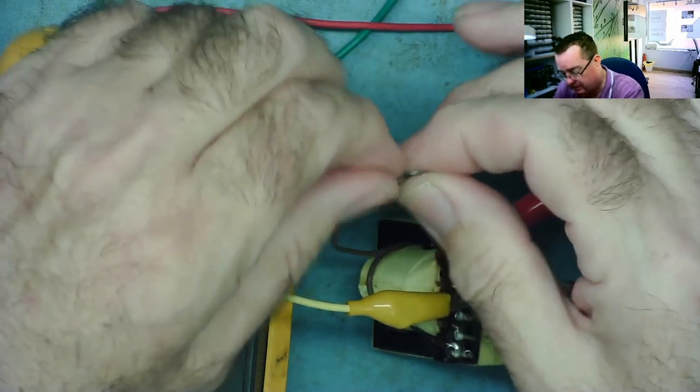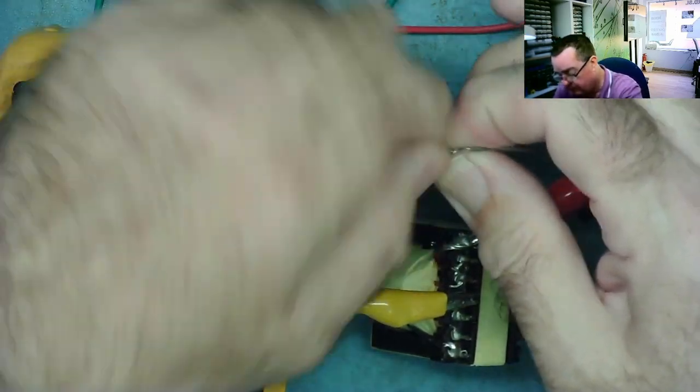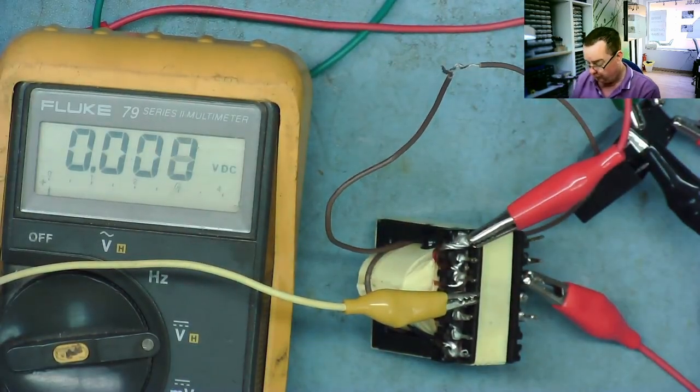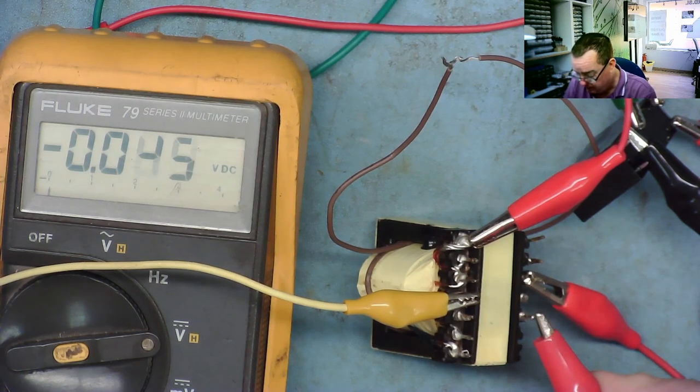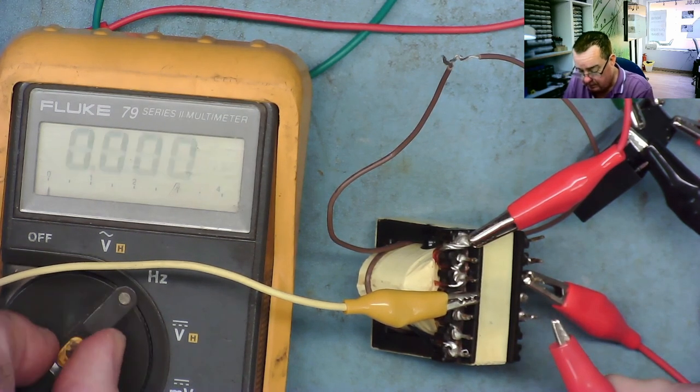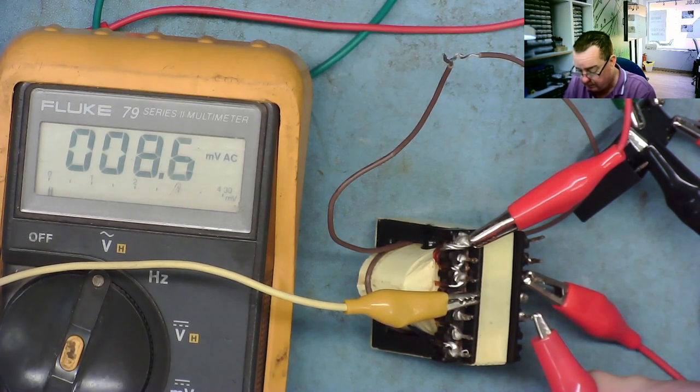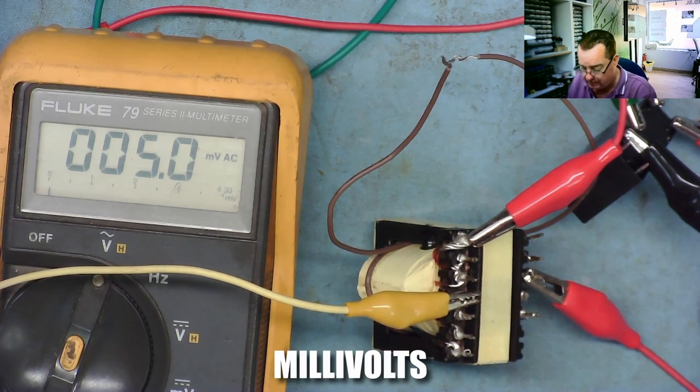And it might be if we stick it, say, on the primary and then we short this turn and we measure the voltage on the secondaries, we may see an output voltage and then when we short the turn it might go away. That's my theory that I want to test, so let's see if we can do it. To do this we're going to need a few more crocodile clip wires. Volts AC, what do we get? About eight, 7.9, 8.